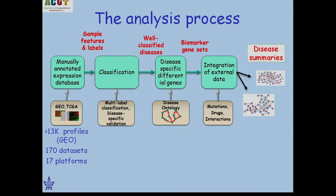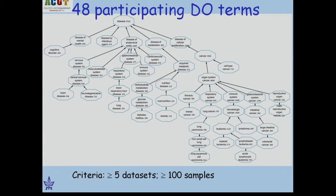Here is the overview of our analysis process. We start by manually annotating a set of over 13,000 profiles from GEO — very diverse, 170 datasets from 17 microarray platforms. We manually assign disease ontology terms, perform classification, identify well-classified diseases, and for those identify the differential genes as biomarkers. Once we have the biomarker gene set, we integrate it with mutation databases, drug targets, and interactions to create highly informative disease summaries.